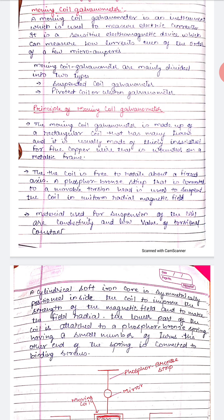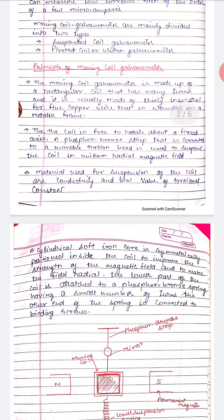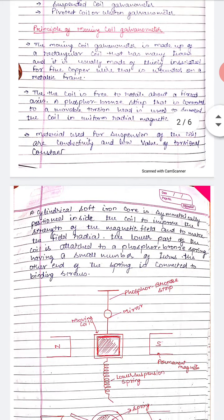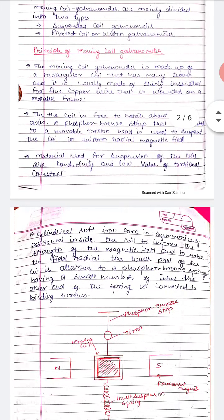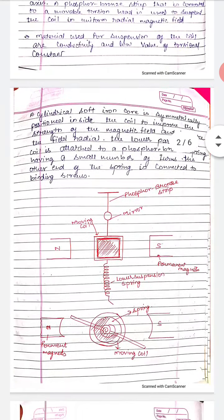A phosphor bronze strip connected to a movable torsion head is used to suspend the coil in a uniform radial magnetic field. The material used for suspension of the coil has high conductivity and a low value of torsion constant. Torsion constant refers to the torque applied when the coil rotates.